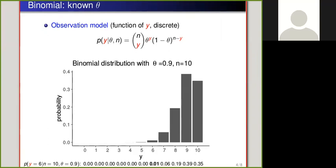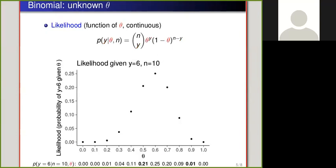Instead of just comparing these two theta values, we can compare more. Here these different theta values are 0.0, 0.1, 0.2, and so on.